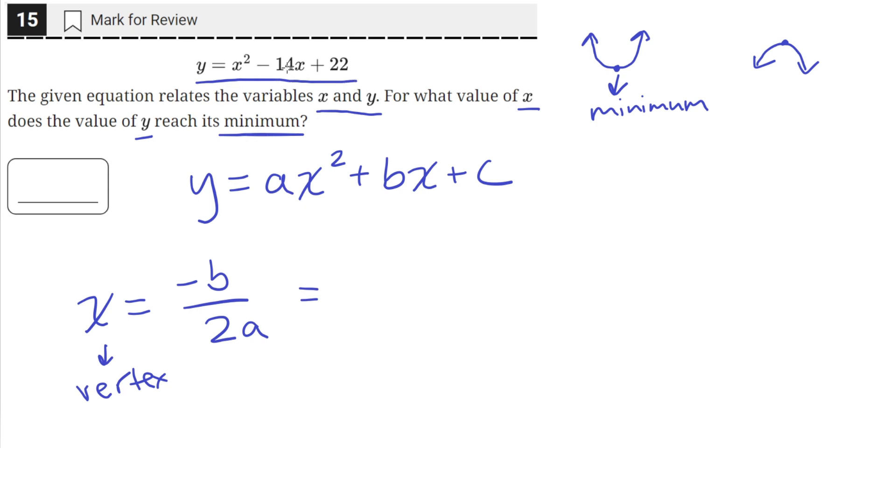So for this quadratic, b is equal to negative 14. So we'll have negative and then negative 14 divided by 2 times a. a is the coefficient of the x squared term. So in this case, it's just 1. So 2 times 1.